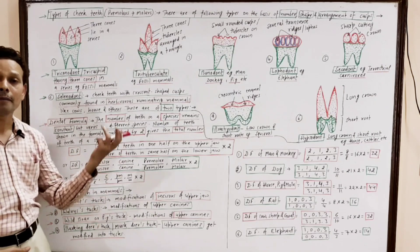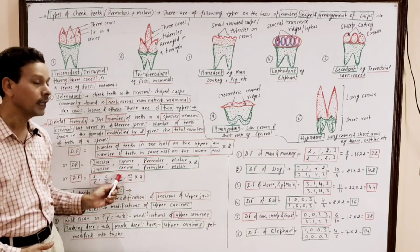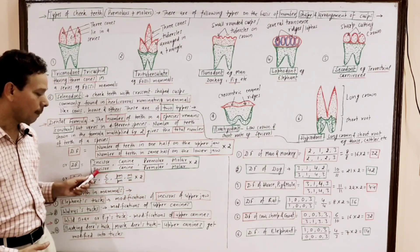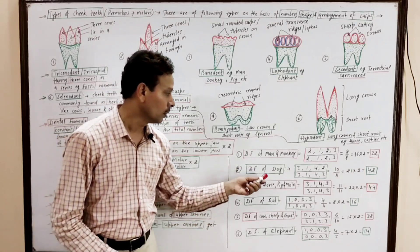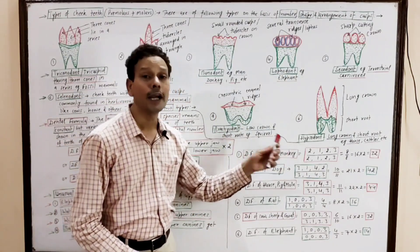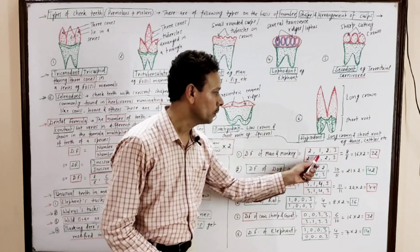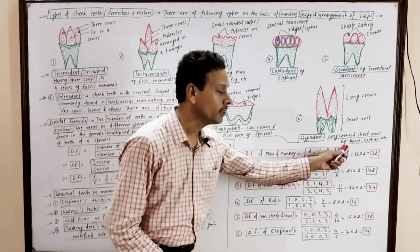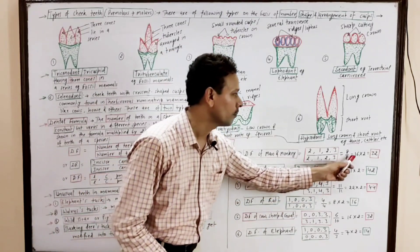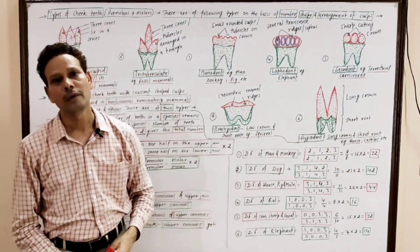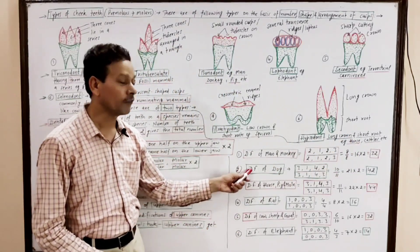The dental formula may be represented as: Incisors (I), Canines (C), Premolars (PM), Molars (M) — upper jaw over lower jaw, multiplied by two. For example, the dental formula of man and monkey is: I 2/2, C 1/1, PM 2/2, M 3/3. That is eight in half the upper jaw and eight in half the lower jaw — eight plus eight equals sixteen, multiplied by two gives a total of 32 teeth.